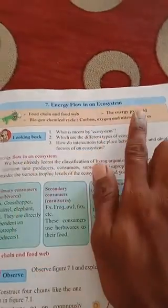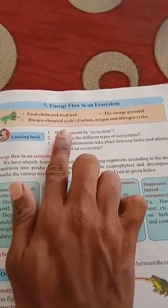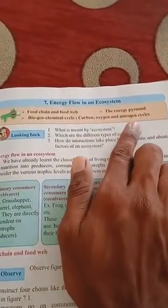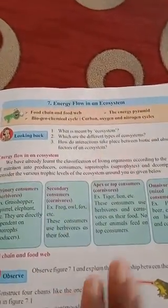In this chapter we are going to cover food chain and food web, energy pyramid, and biogeochemical cycles — the carbon cycle, oxygen cycle, and nitrogen cycle. All three concepts will be studied.